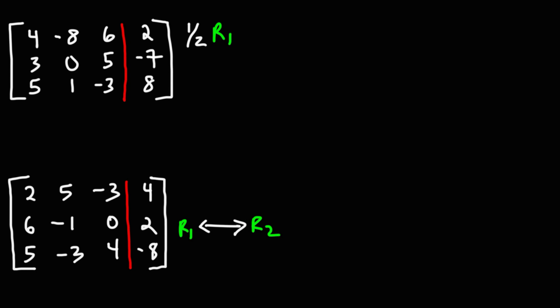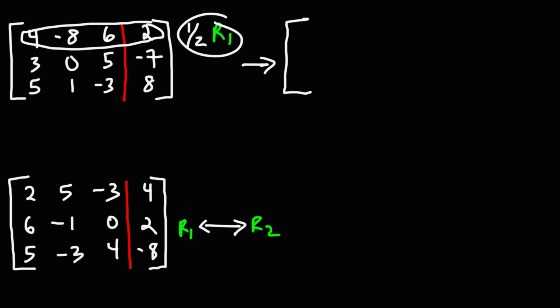In this lesson, we're going to talk about how to perform elementary row operations. For the first example, we have 1/2 R1 listed next to the first row. What that means is that we're going to multiply all the elements in the first row by 1/2.